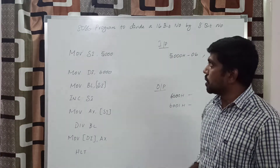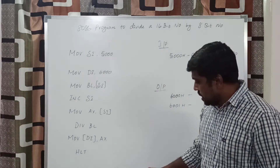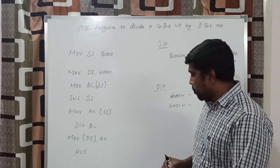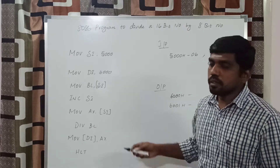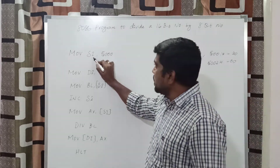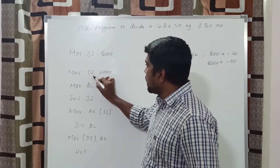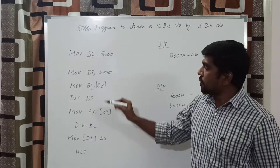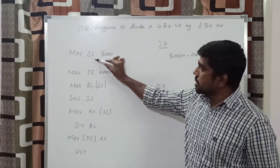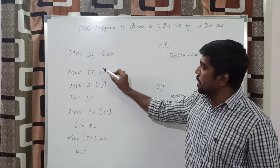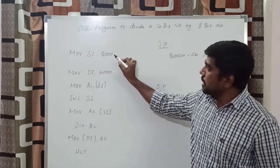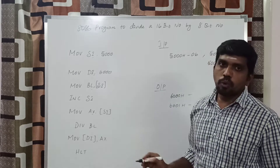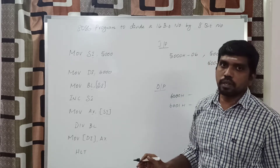Now let us go to the program. In this program I am using four registers: SI, DI, BL, and AX. The first two registers, SI and DI, declare the input memory location and output memory location.